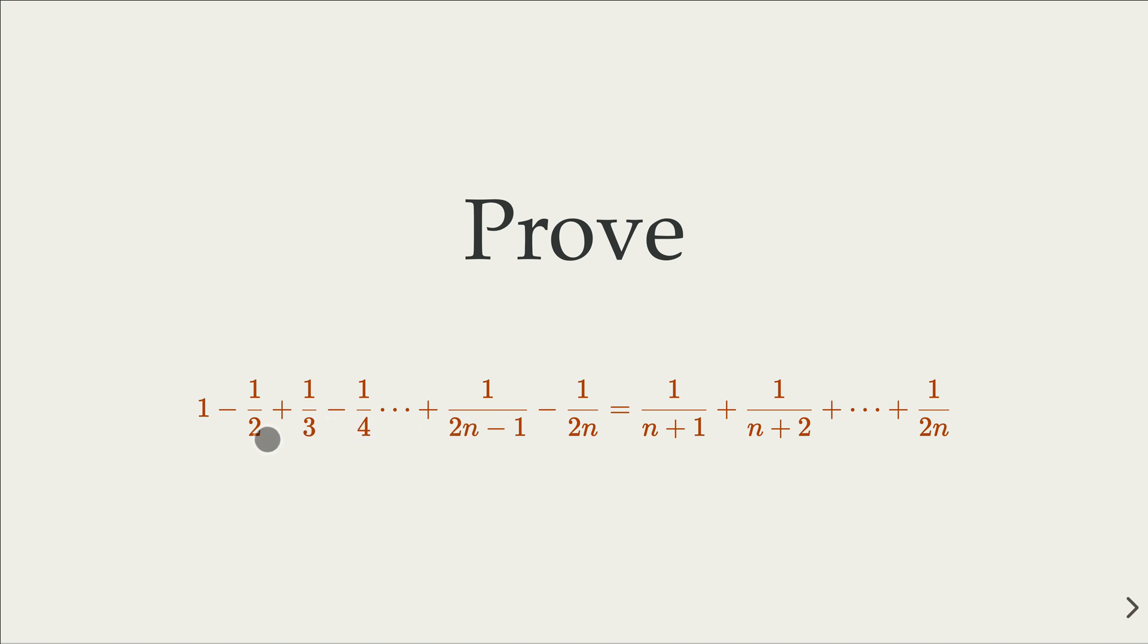Notice that all the even number terms is minus, all the odd number terms is plus. We claim that this expression equals 1 over n plus 1 plus 1 over n plus 2 up to 1 over 2n.